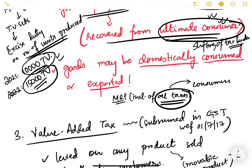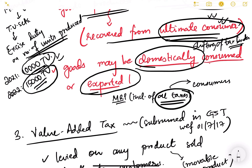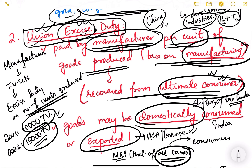Excise duty is paid by the manufacturer regardless of whether he sells the product in the domestic market or exports it to foreign countries — whether he sells in India or in the USA, Europe, or anywhere in the world, he has to pay the excise duty. It is a tax on manufacturing, per unit of production.